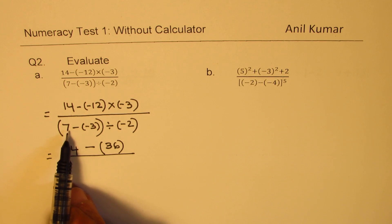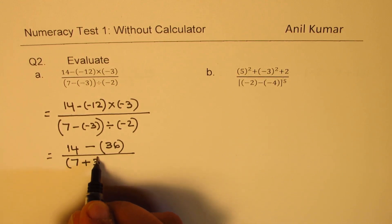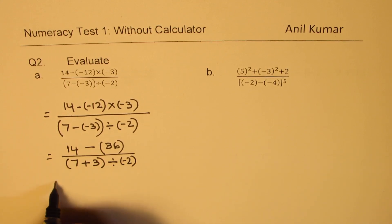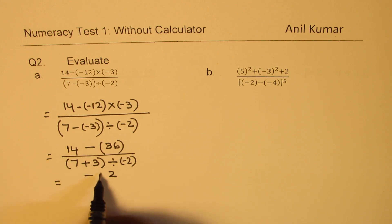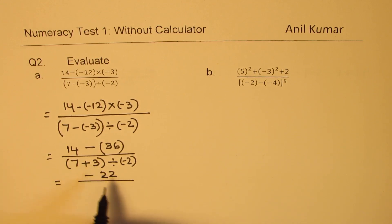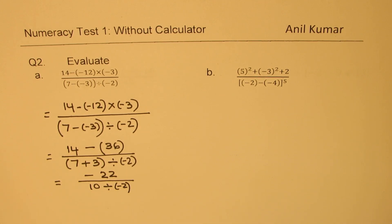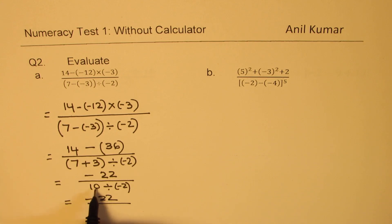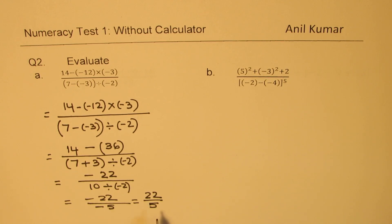In the denominator, we do things in the bracket first: 7 minus (-3) makes it 7 plus 3. We rewrite as 7 plus 3, then divide by minus 2. So we get 14 minus 36 — the sign will be negative, and that's minus 22. The denominator: 7 plus 3 is 10, divided by minus 2 is minus 5. So we have minus 22 divided by minus 5, which gives a positive result: 22 over 5, or 4 and 2 over 5 as a mixed number.